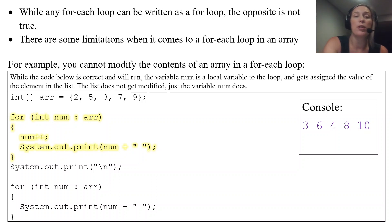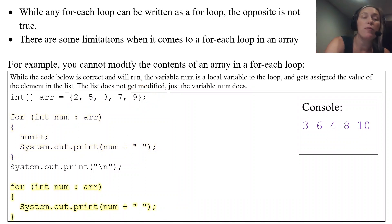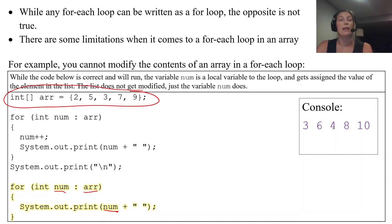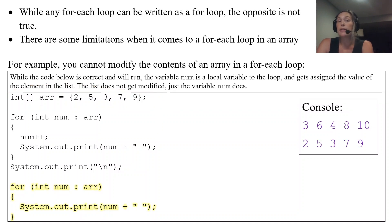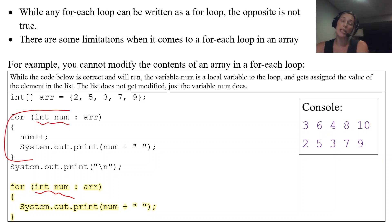Notice that nothing happened to the original array — we didn't change it at all. We had a local variable num, and that's what got changed and printed. When we then do a second for-each loop to print each num in arr, the output is still 2 5 3 7 9 — nothing got changed. This is why num can be declared twice: it's local to each for-each loop.